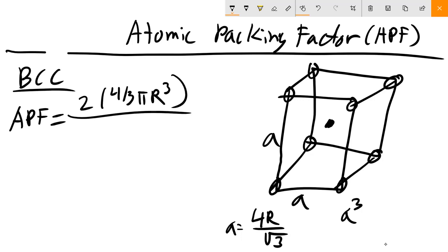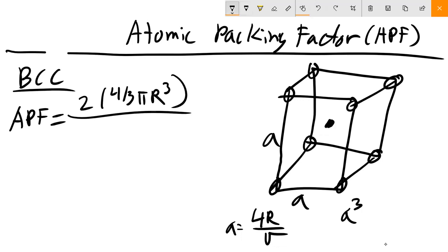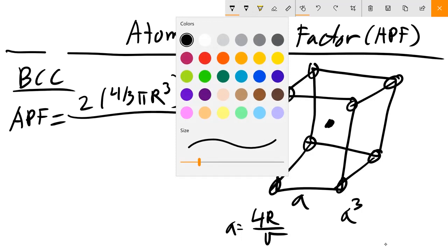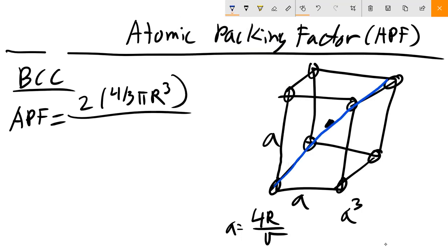You could actually derive that by noticing that in this direction, the diagonal here, this entire diagonal distance—this distance across the diagonal—that's where our nearest neighbor distance is. When this atom is essentially touching this atom, we know that that line magnitude is 4R.